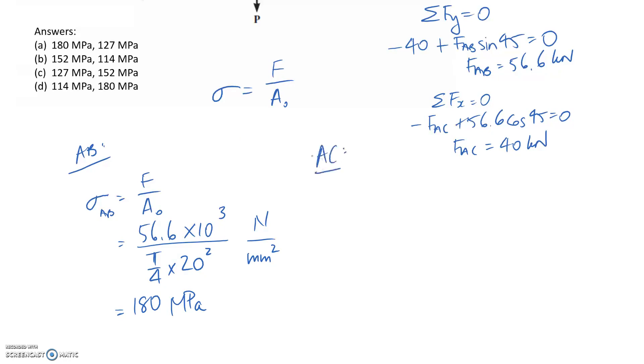And we need to do it for AC. So the force in that member divided by the area. AC, we said the force was 40 kilonewtons. Again, to fix our units, I'm going to times by 10 to the 3. And then we divide by the area, which was the same as the previous one. So this comes out to about 127 megapascals.